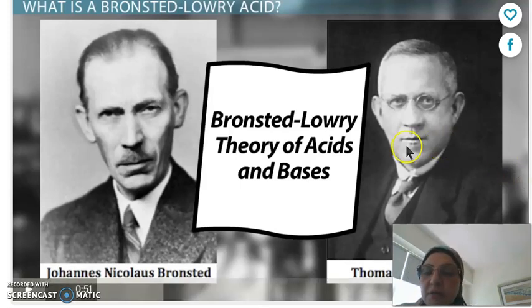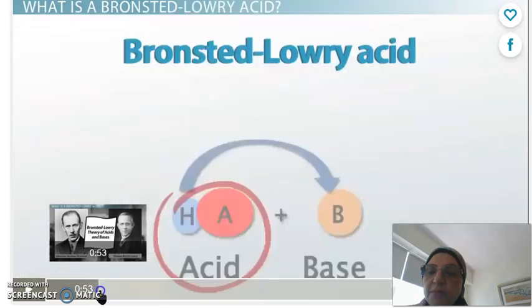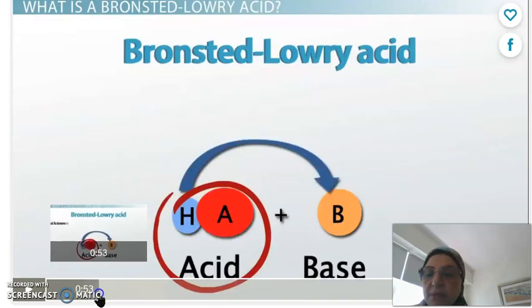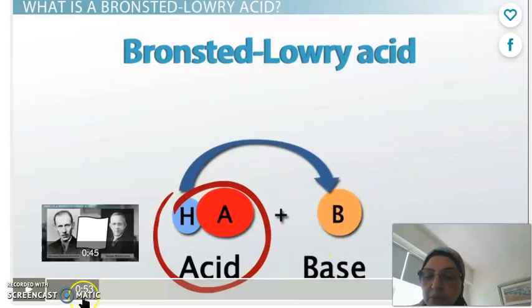The name Bronsted-Lowry came after the work of two scientists working in different areas of the world, and both came up with the same definition for acid and base. Bronsted-Lowry acid is described as a species that can donate a proton, while Bronsted-Lowry base is a species that can accept a proton.